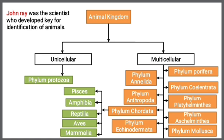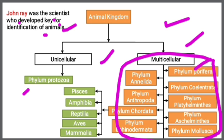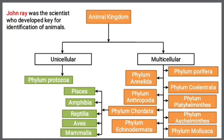In the previous lecture, we discussed a classification table. This animal kingdom was classified by the scientist John Ray, who developed the key for the identification of animals. The animal kingdom is divided into two subclasses: unicellular and multicellular. In unicellular, there is phylum Protozoa, and in multicellular there are 9 phylums. We had covered Porifera, Cnidaria, and Platyhelminthes. Now we will start with Aeschelminthes.